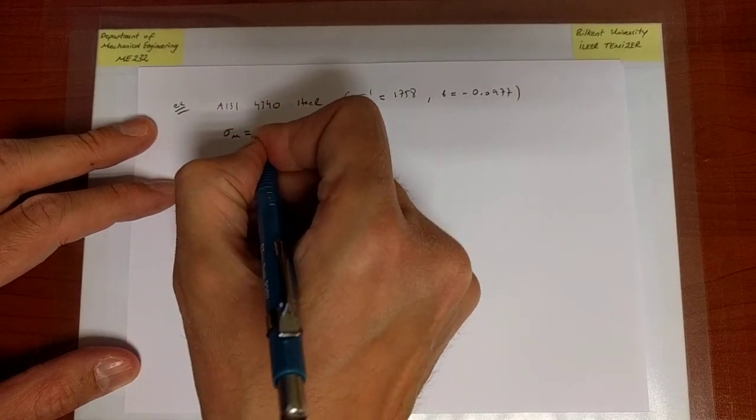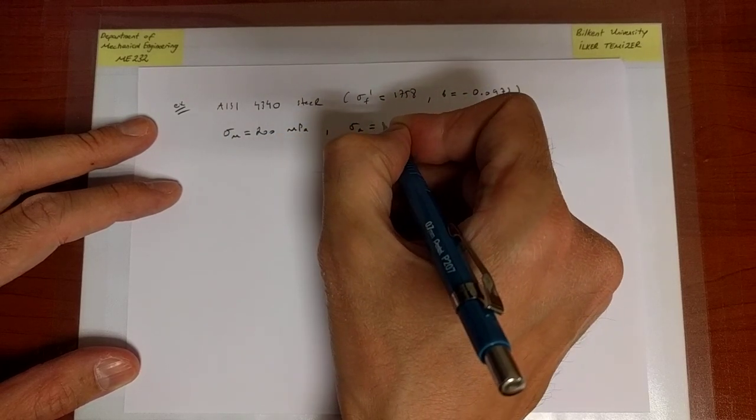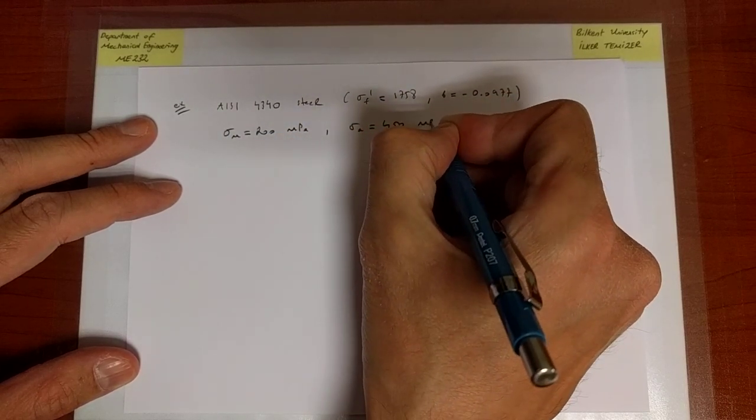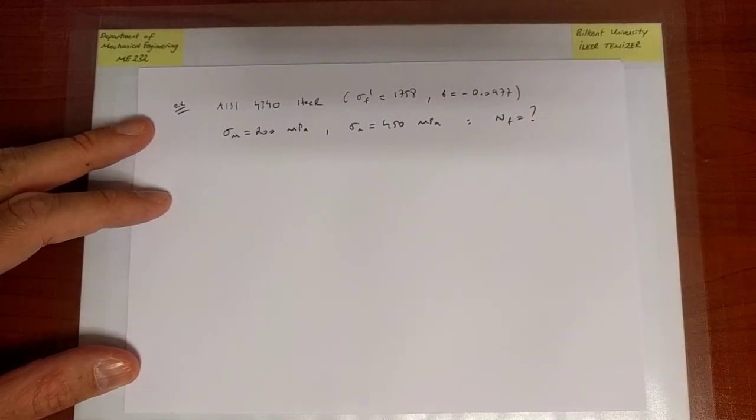We're given this problem where sigma m is equal to 200 MPa and the value of the alternating stress is 450 MPa. And the question is, what is the number of cycles to failure?